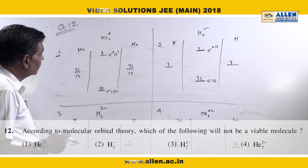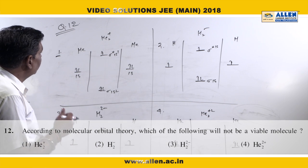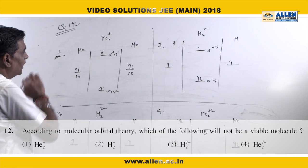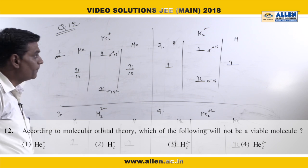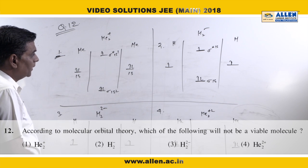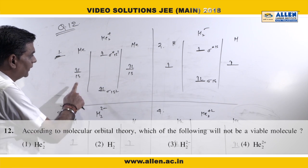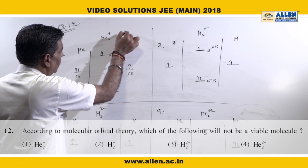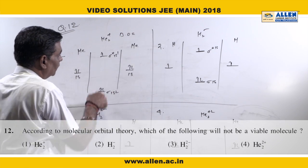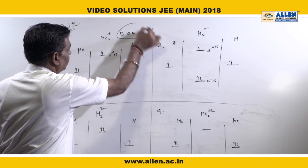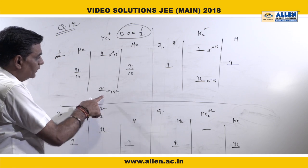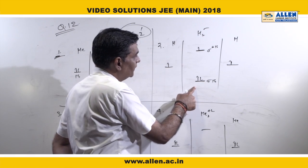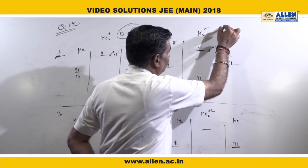We need to identify which molecule does not exist — the one that is not stable. The first molecule is He₂⁺. If we draw its MO diagram, it becomes clear that its bond order is half — two bonding electrons and one anti-bonding electron — so its bond order comes out to be half.